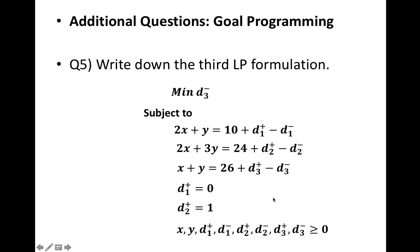The last problem is then solved with minimizing d_3^- in this case. We have all the constraints before and add d_1^+ equal to 0, d_2^+ equal to 1 from the previous solutions. And we add a soft constraint: x + y = 26 + d_3^+ - d_3^-.